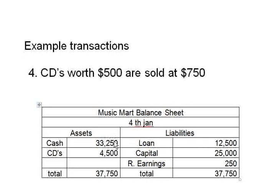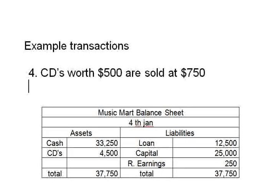Since we sold at 750, the cash account increases by 750, so cash is now 33,250. Since we sold CDs worth 500, inventory decreases from 5,000 to 4,500. On the left side overall there is an increase of 250 dollars. To balance this, on the right side we add a new entry called retained earnings, shown as positive 250. Any profit the company makes is reflected in retained earnings; any loss is reflected as a negative number.